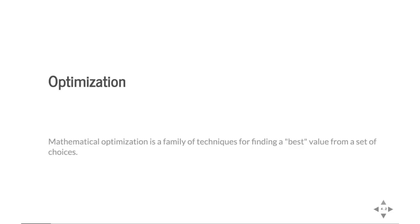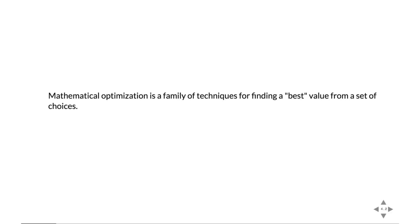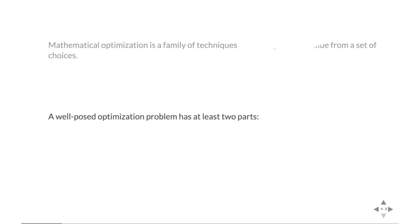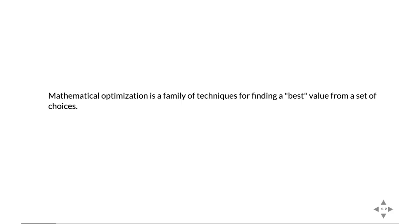Mathematical optimization is a family of techniques for finding the best value for some set of choices. This comes up all the time in finance, operations research, or any domain where you have a set of possible choices and want to find the best one. 'Best' means different things in different contexts, but we have a general family of tools for finding good values among a set of choices.